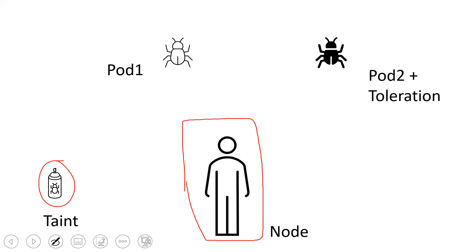Now if pod one bug wants to touch the man, due to the smell of the taint, it will not be able to touch the man's body. But suppose pod two bug has evolved a toleration about this smell — then in that case, pod two bug can touch the man's body. So this is the whole concept about taints and tolerations.